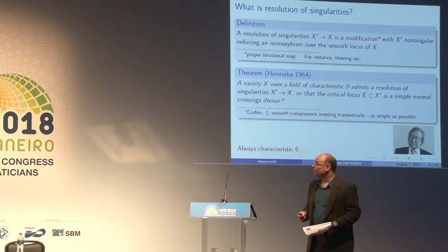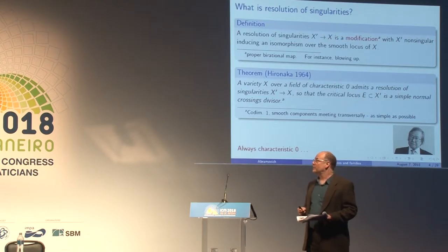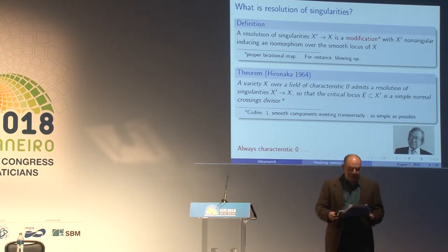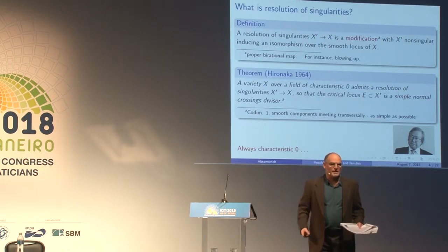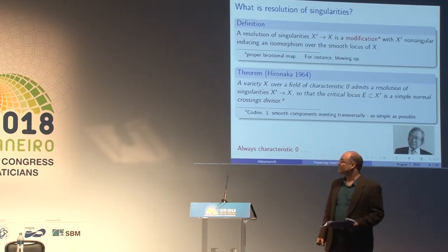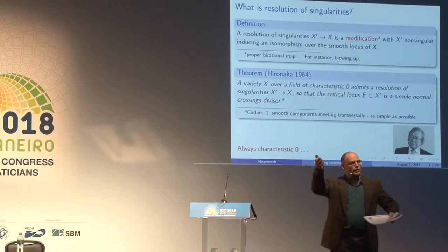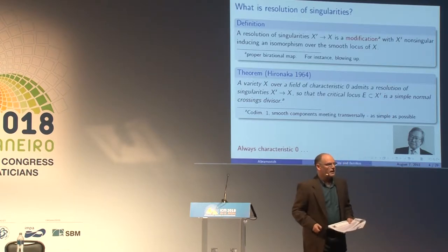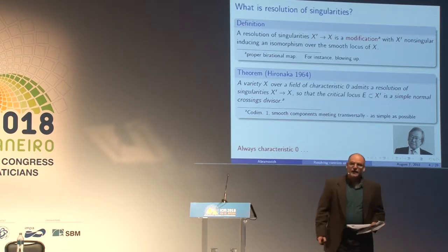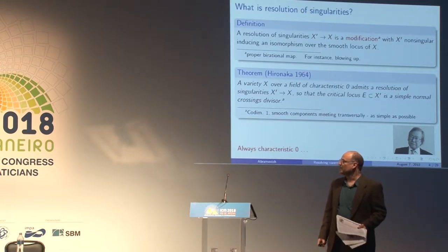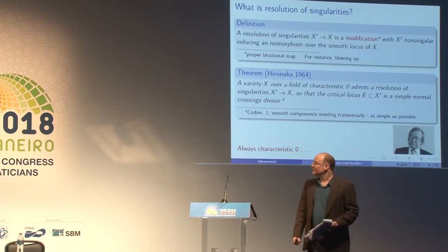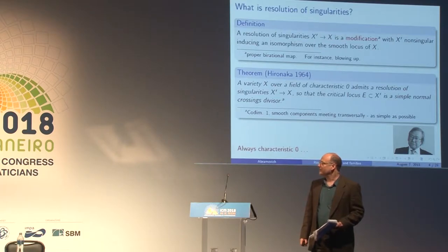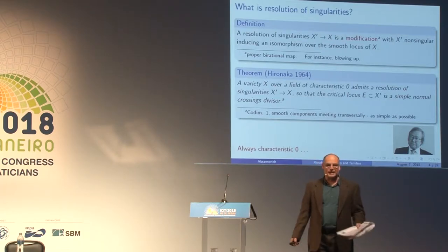One of the great results in birational geometry — perhaps the first Fields Medal in birational algebraic geometry — is the theorem of Hironaka in 1964, which says that a variety over a field of characteristic zero admits a resolution of singularities. Moreover, it admits a resolution so that the exceptional locus is a simple normal crossing divisor, namely a union of smooth co-dimension one strata meeting transversely. My entire lecture will be in characteristic zero.